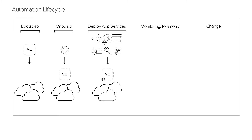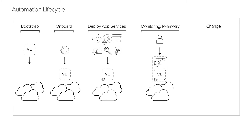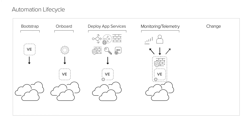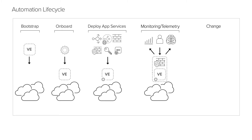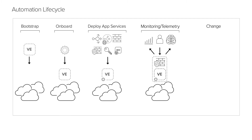Next is Monitoring and Telemetry. BigIP is a Layer 7 proxy that sits between users and applications, collecting a wide variety of information that's useful for analytics and insights. In this lifecycle stage, BigIP formats and exports this valuable data to selected analytics data consumers.